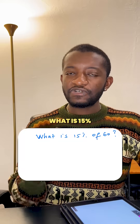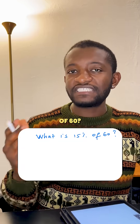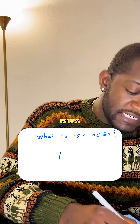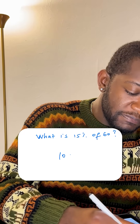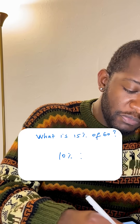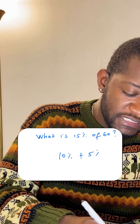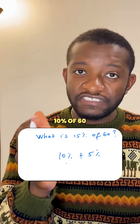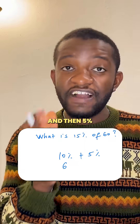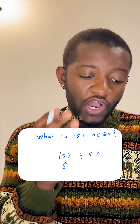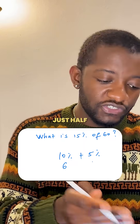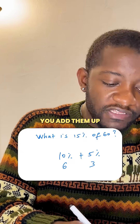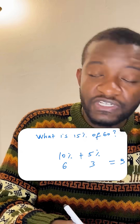What about 15% of 60? You know that 15% is 10% plus 5%. So 10% of 60 is 6, and 5% of 60 is just half of that — it's 3. Add them up and you get 9.